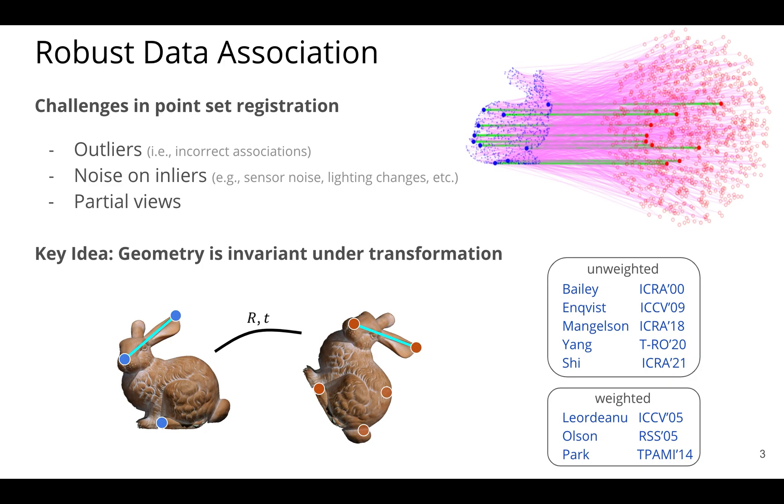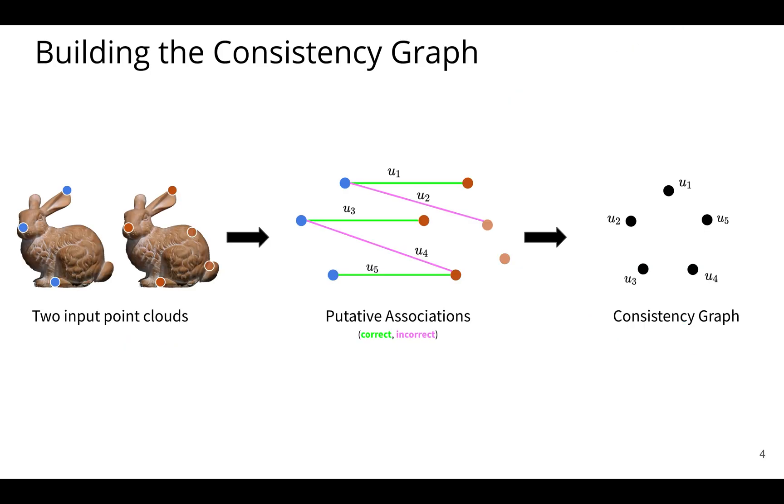But for now, the important thing is that all these works leverage this idea to build up some sort of graph where each edge in this graph encodes what we call association consistency. So let's dig into that a little bit more.